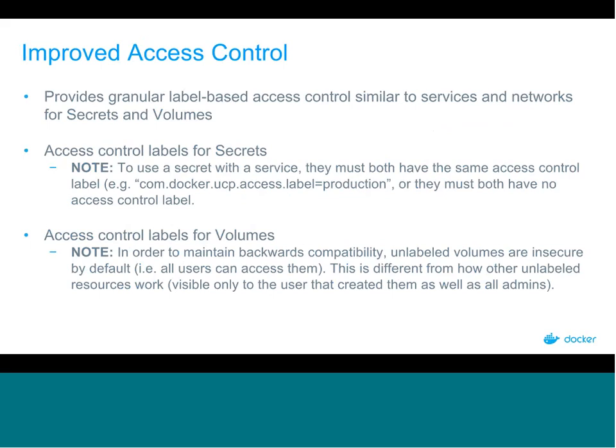To complete the security improvements, we've added granular label-based access control for secrets and volumes — similar to what already exists for services, networks, and containers. For secrets, access control uses a com.docker.ucp.access.label — a service and secret must share the same access control label to be used together, ensuring users with access to one have access to both. For volumes, unlabeled volumes are accessible by all users — slightly different for backwards compatibility — but labeled volumes restrict access to authorized users and admins.